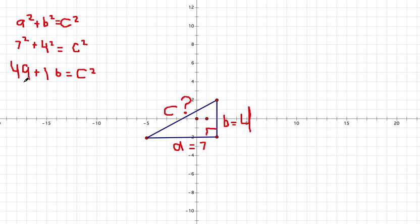Now we have to add these two numbers together. Forty-nine plus sixteen equals sixty-five. And sixty-five equals C squared.